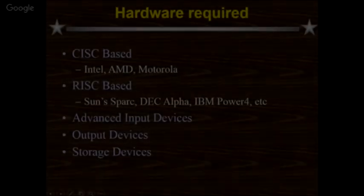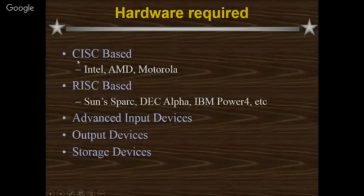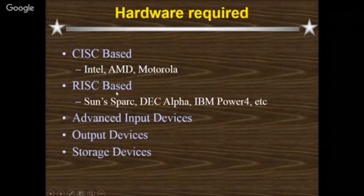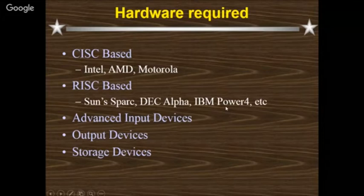Hardware required for CAD/CAM systems: CISC-based processors (Intel, AMD, Motorola) — normally we go for CISC-based hardware; RISC-based processors (SunSpec, DEP, IBM). Also required are input devices, output devices, and storage devices.